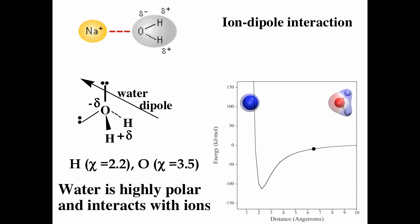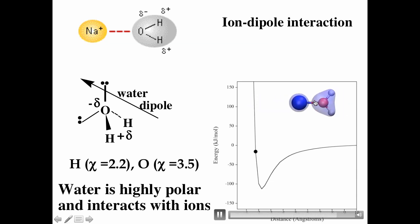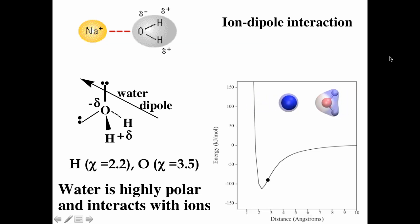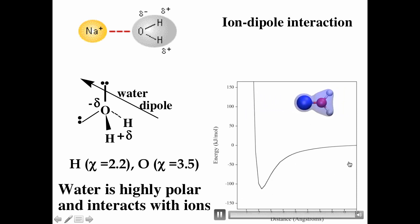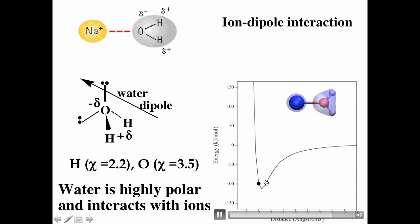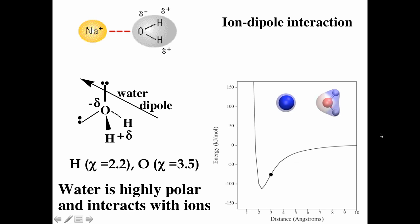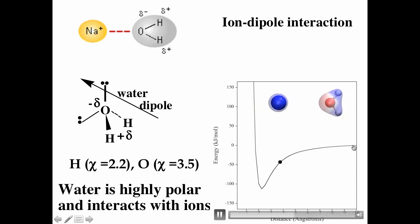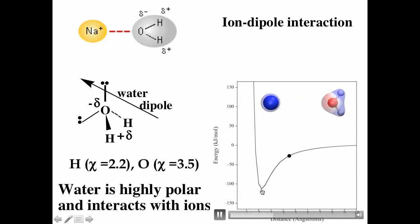We can actually look at the ion-dipole interaction on an energy diagram. Note: there is no actual chemical bond between the sodium and the water — it's just a software artifact. On the left you have the sodium ion, and on the right the water molecule, with energy on the y-axis. As the sodium ion and the water molecule get closer, you get stronger attraction, and eventually some repulsion. It's the attraction that leads to lower energy and a more stable configuration. Defining the energy as zero when they're infinitely far apart, we see a minimum of about −120 kJ/mol.